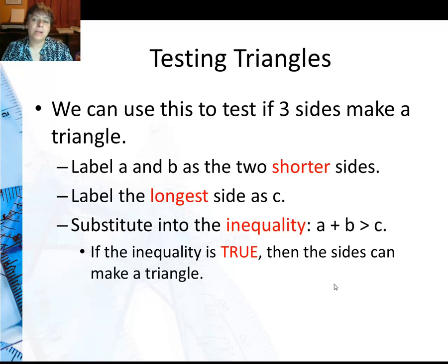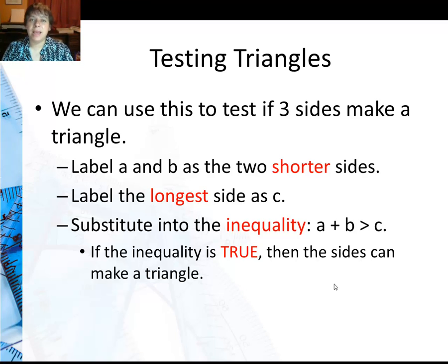If the inequality is true, then the sides can make a triangle. So we're going to determine in this example if the sides can make a triangle. I've got 4, 7, and 10.